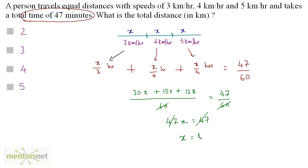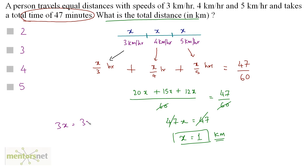So x equals 1, and this distance is in kilometers because the speed was in kilometers per hour. We have been asked for the total distance, which is 3 times x. So 3 times 1 equals 3 kilometers. Option B is the correct answer.